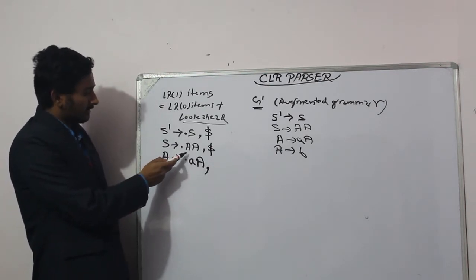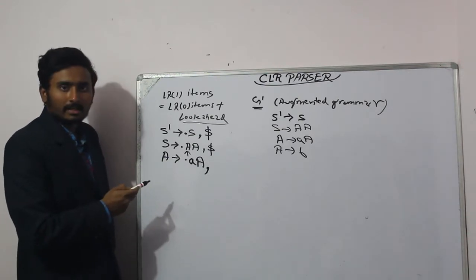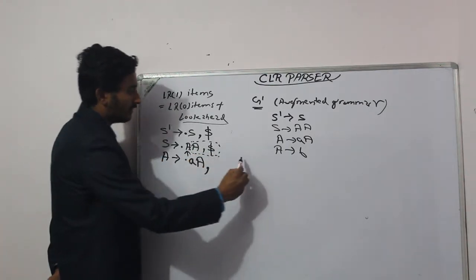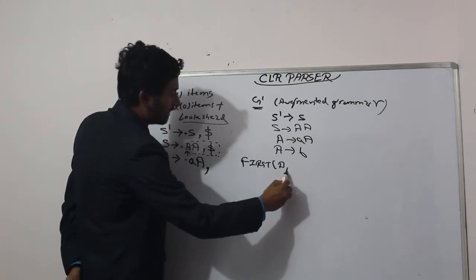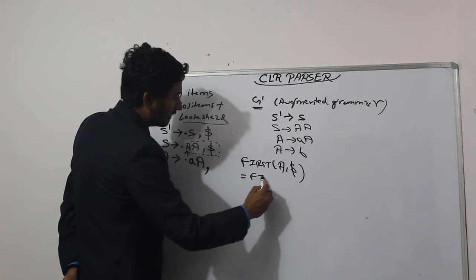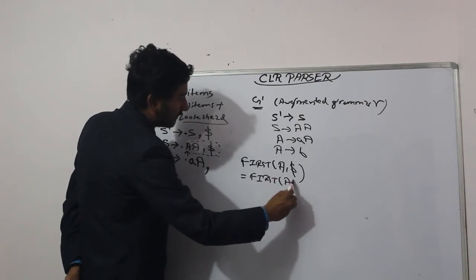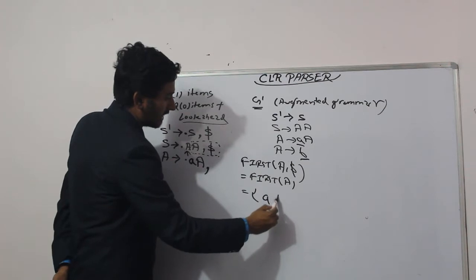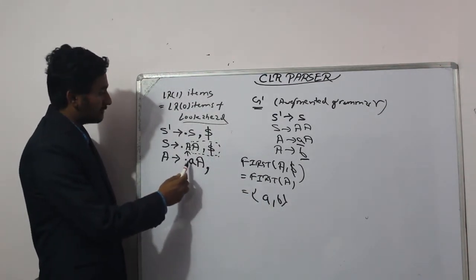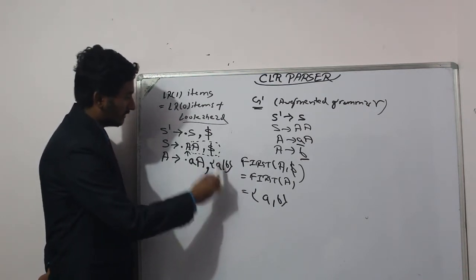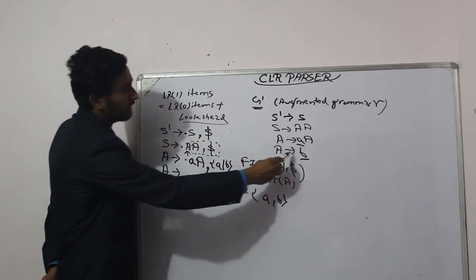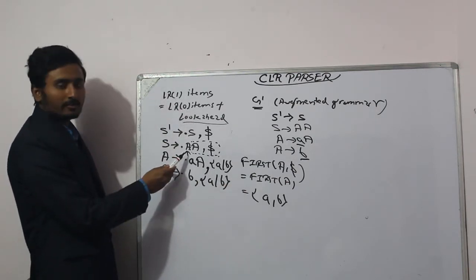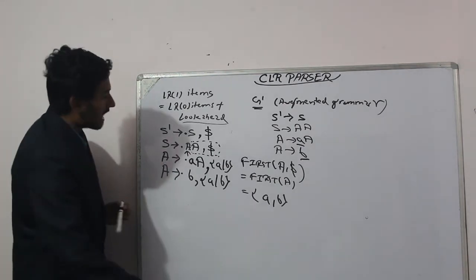We are deriving the production for A, and we take FIRST of the remaining string to find the lookahead. FIRST of (A, dollar) equals FIRST(A), which is {a, b}. So we write A derives dot a with lookahead a or b. Since A also derives b, we write A derives dot b with the same lookahead a or b.